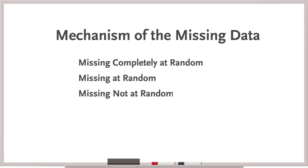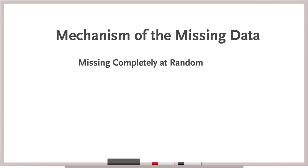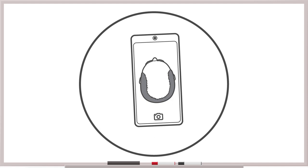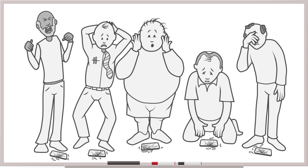So what's an investigator to do? Well, first, consider the mechanism of the missing data. The mechanism is known as missing completely at random when the likelihood of missing data has no relationship to other variables. For example, in this study, participants upload photos into an app from which measurements are taken, and a handful of patients drop and break their phones so they can't upload photos. That scenario is equally likely to happen to any participant regardless of hair growth, so we consider the data to be missing completely at random.